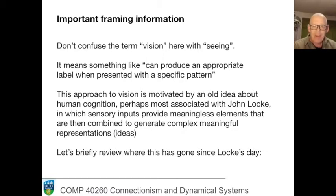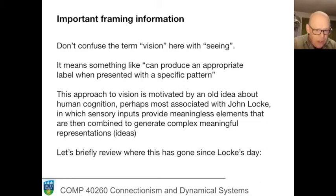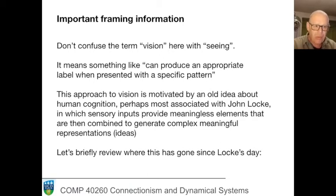For when we see a cat, we see a cat — there's understanding there. We're bringing our categories and our knowledge to bear. Obviously the eyes and the distribution of light play a role, but when we speak in everyday language of seeing, we are not distinguishing between patterns of illumination and understanding. When the term 'vision' is applied in a machine learning framework, what we mean instead is something completely different: a system which can produce an appropriate label when presented with a specific pattern.